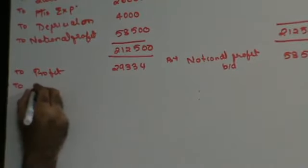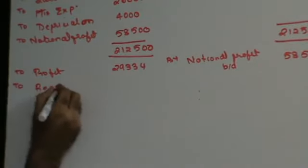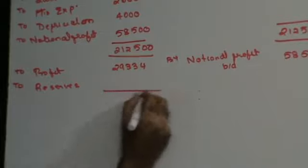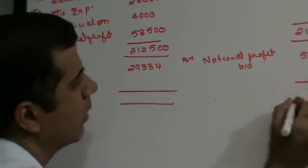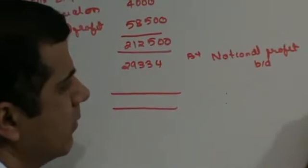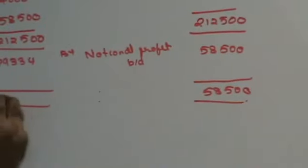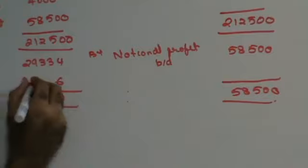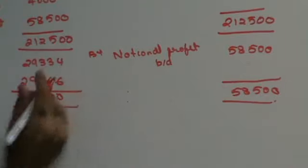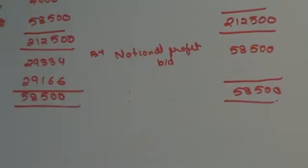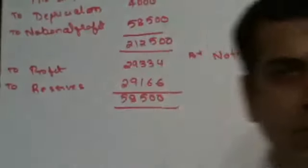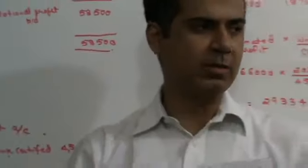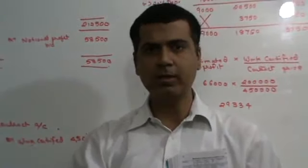So this you will write here as to profit, 29,334. And this is going to be, the difference is called as reserves. This is 58,500. The difference is 29,166. Simple straightforward sum. This finishes the sum. Let's drop this here for the day. Thank you very much.